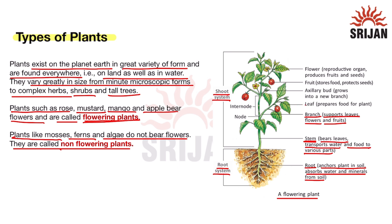The leaf prepares food for the plant — leaves are known as the food factory of the plant as they help prepare food and provide nutrition. The axillary bud grows into a new branch.